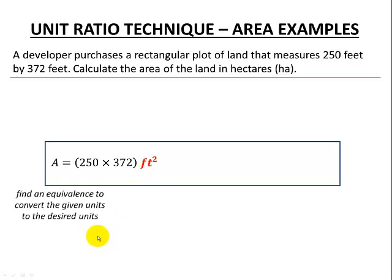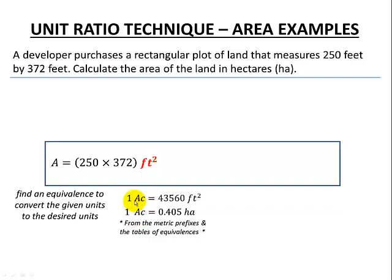We'll now have to look up to see if there's an equivalence between feet squared and hectares. When we look up our tables, we can see that there's a unit called an acre, and one acre is defined as 43,560 square feet, and also one acre is 0.405 hectares. So this is imperial and imperial, and this is imperial and metric, which is what we want to do.